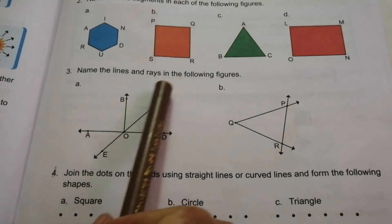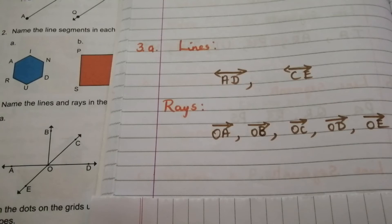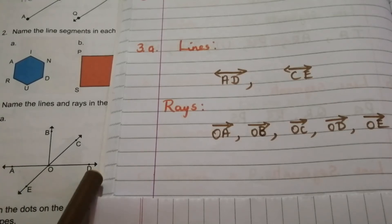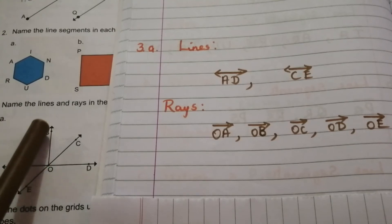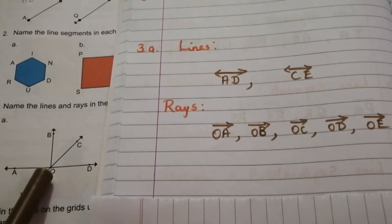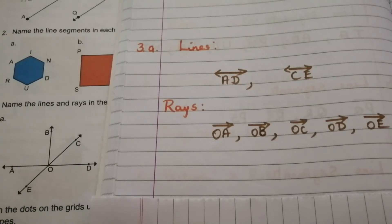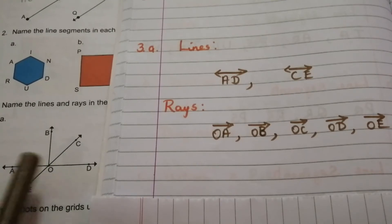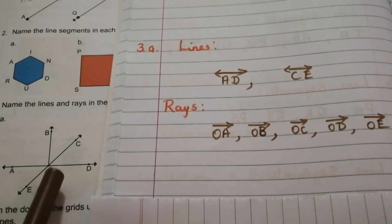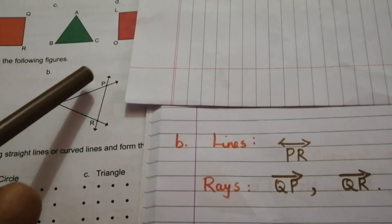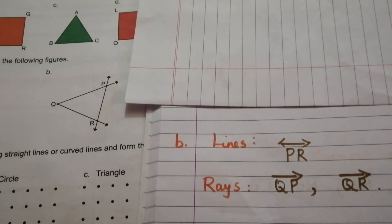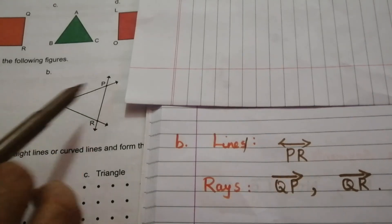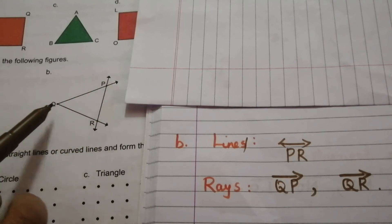Question 3: Name the lines and rays in the following figures. A figure with two arrowheads is a line; a figure with one arrowhead and one fixed point is a ray. In problem (a), AD and CE are the lines, and OA, OB, OC, OD, OE are the rays. Problem (b) has one line PR and two rays QP and QR.